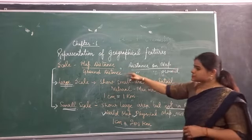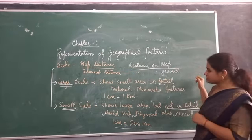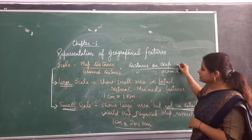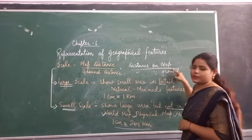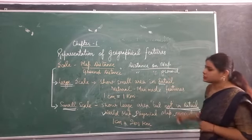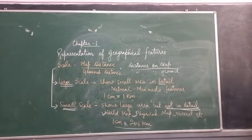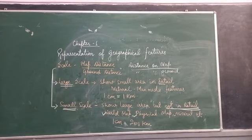The scale of the map is map distance upon ground distance, which is equivalent to the distance on map or the distance on ground. So the ratio between the distance on map and the distance on ground is equal to the scale of the map. The ratio between the map distance and ground distance is known as the scale of the map.